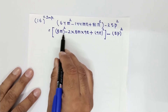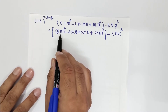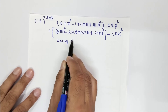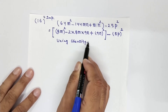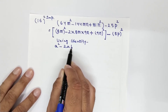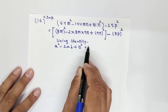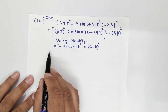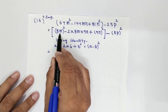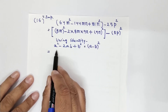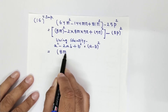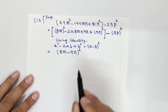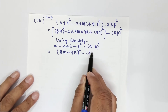Now, inside the square bracket we can clearly see the identity A² minus 2AB plus B². Using identity: A² minus 2AB plus B² equals (A minus B) whole square. This identity applies inside the bracket. So in place of A we have 8m and in place of B we have 9n, giving (8m minus 9n) whole square. The minus (5p) whole square remains as it is.